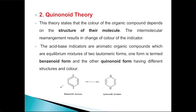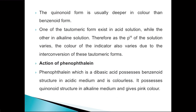As per the structural differences, the two forms show different colors. The benzenoid form has one particular color and the quinonoid form has a different color. The quinonoid form is usually deeper in color than the benzenoid form. One of the tautomeric forms exists in acid solution while the other exists in alkaline solution. Therefore, as the pH of the solution varies, the color of the indicator also varies due to the interconversion of these tautomeric forms.